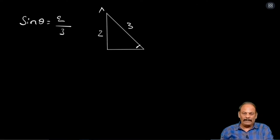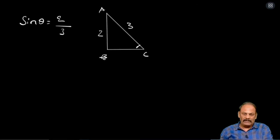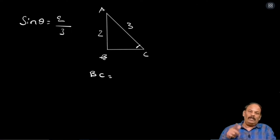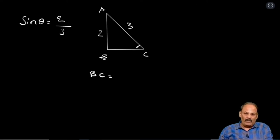We will title the triangle as ABC. Now BC is required in this case. In these model sums, any two sides will be given; the third side you have to find. Now here we need to find the side by using the Pythagoras theorem or right angle triangle property. BC square equal to AC square minus AB square.